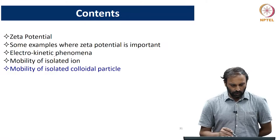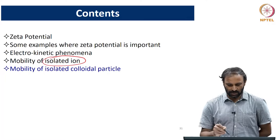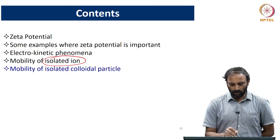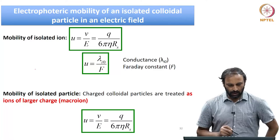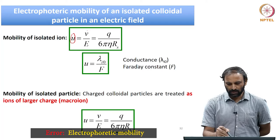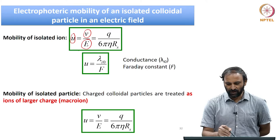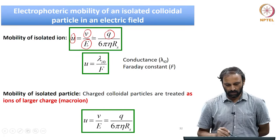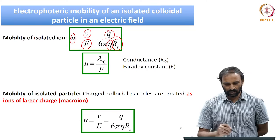So far we have looked at mobility of an isolated ion in an applied electric field. What we will do now is extend this concept to understand the mobility of an isolated colloidal particle in an electric field. The mobility of the isolated ion is given by U, which is the velocity with which the ion is moving per unit field. It depends on the charge of the isolated ion, eta is the viscosity of the fluid, and Rs is the dimension of the isolated ion.